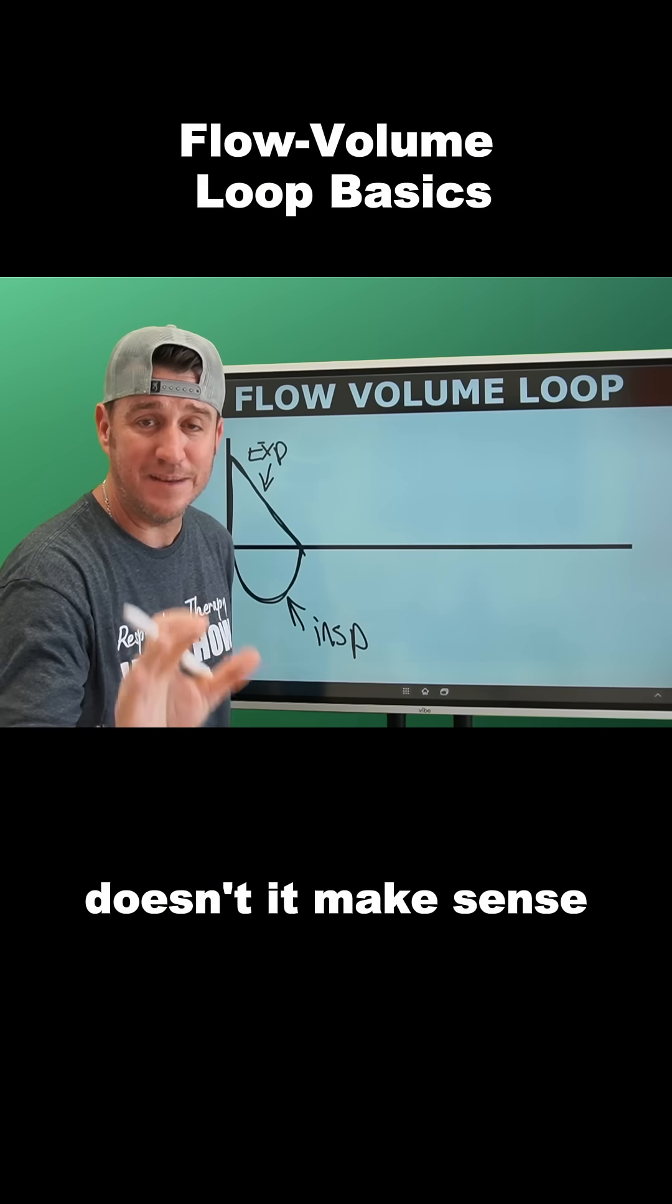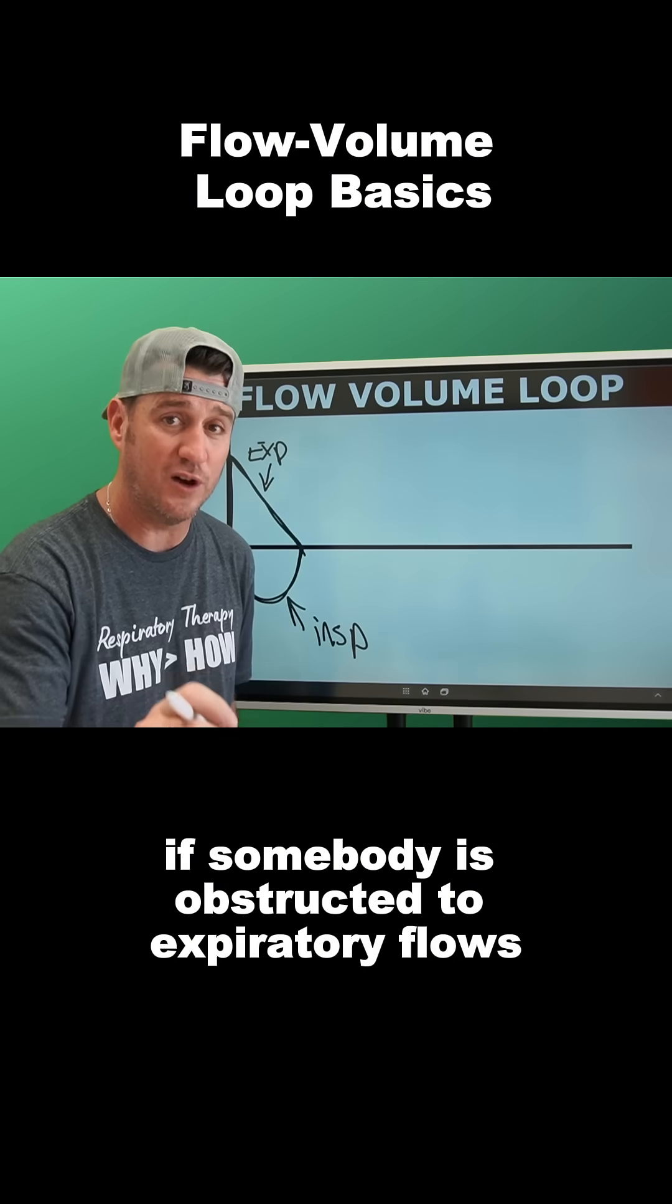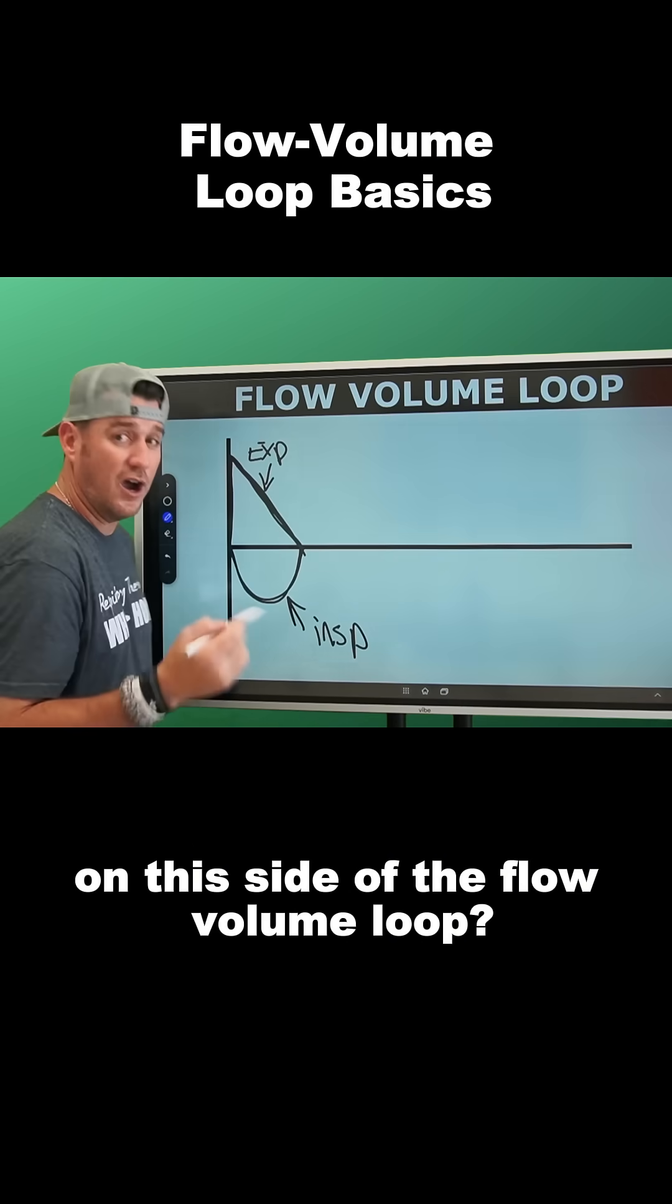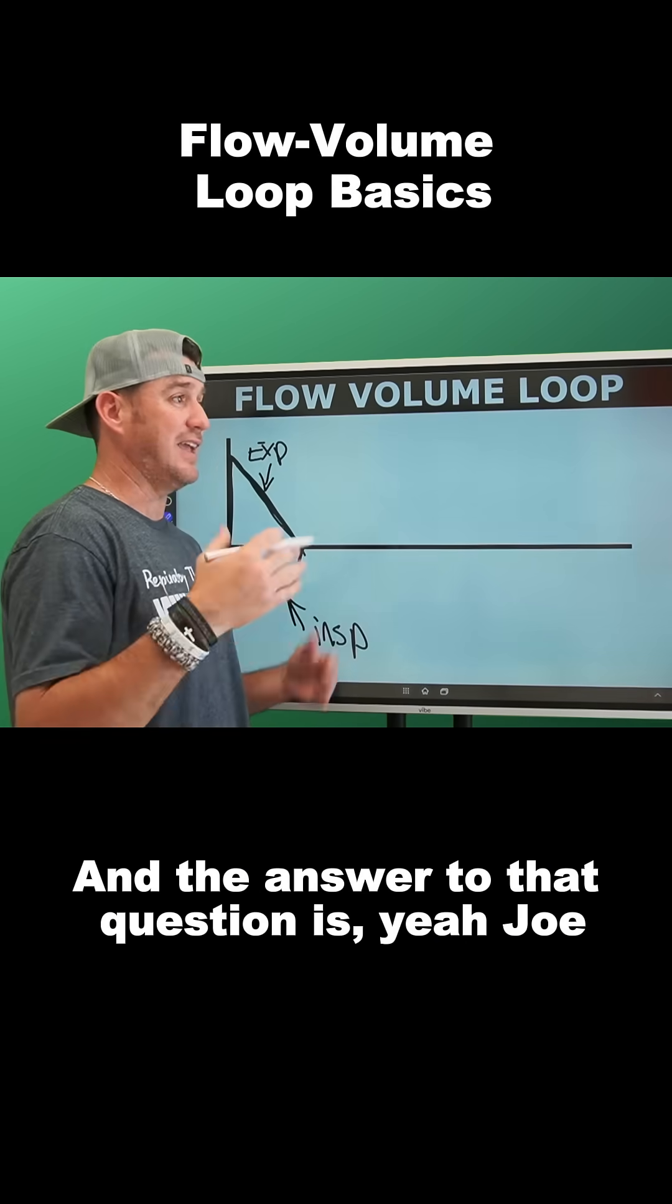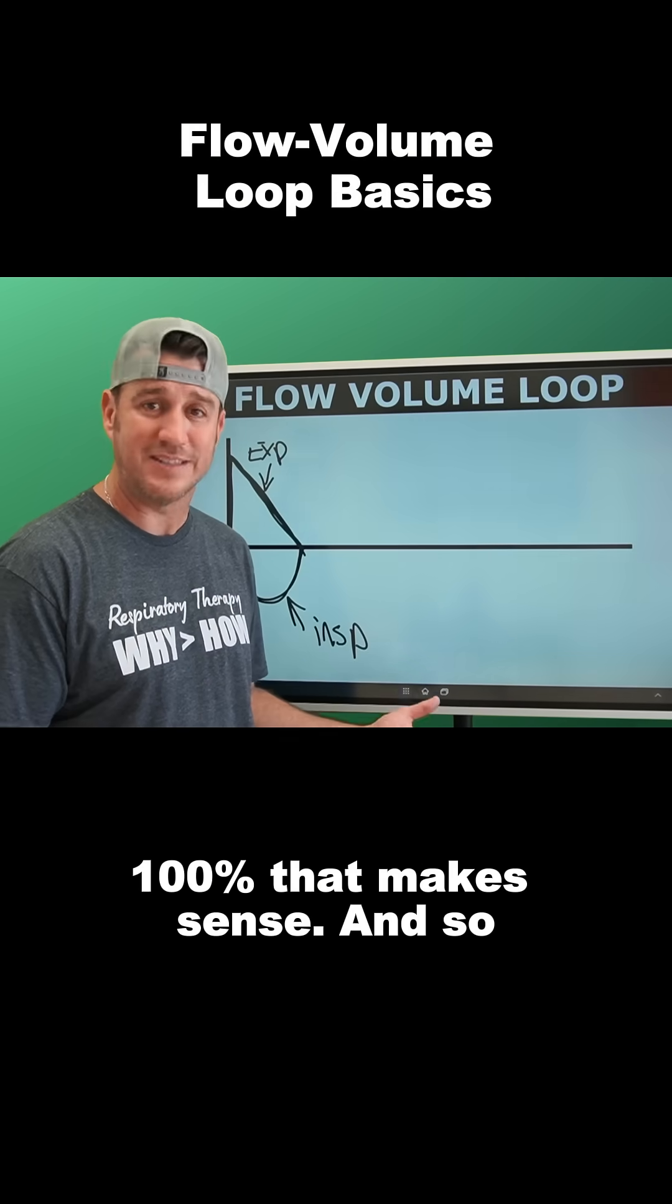Now, doesn't it make sense if somebody is obstructed to expiratory flows that we would see something abnormal on this side of the flow volume loop? And the answer to that question is, yeah, 100% that makes sense.